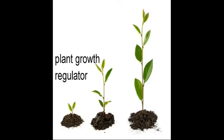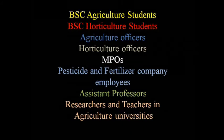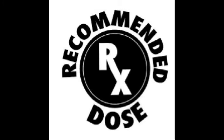The book also has wide extension information on plant growth regulators like auxins, gibberellic acid, ethephon, etc. The book is widely useful for B.S. Agriculture students, B.S. Horticulture students, Agriculture officers, Horticulture officers, MPOs, and persons who work in pesticides and fertilizers companies. It is also useful for assistant professors, researchers and teachers involved in both research and teaching in agriculture universities. Additionally, the book has unique content on pesticides and their recommended doses for 58 grams along with doses per liter to be used against pest and disease control.